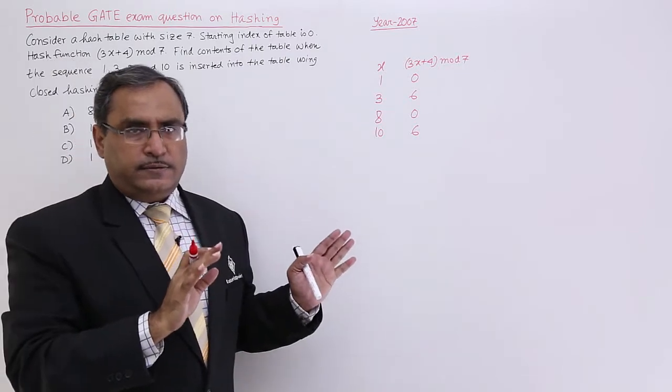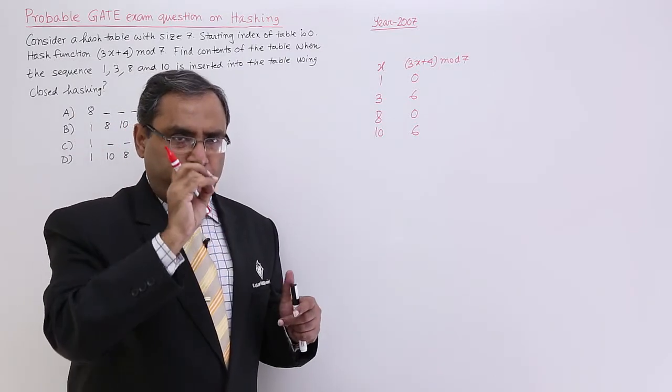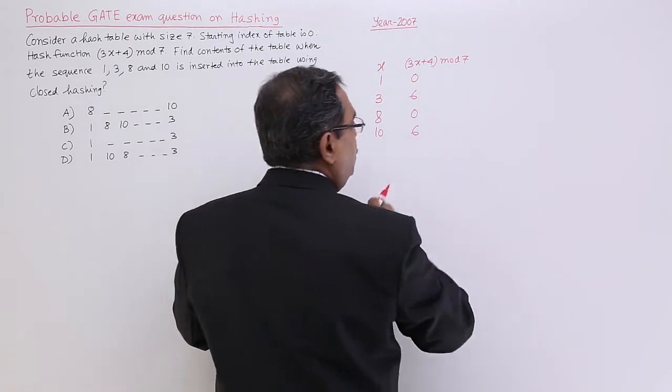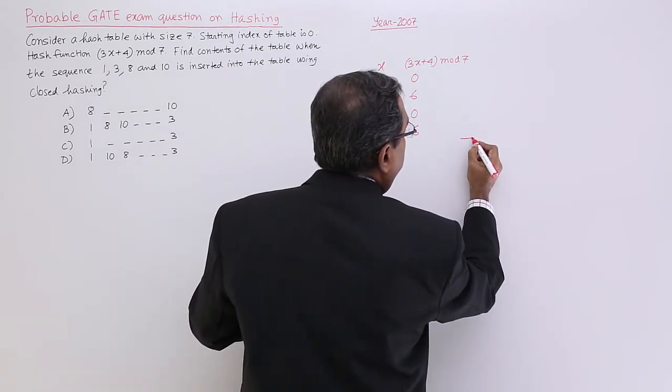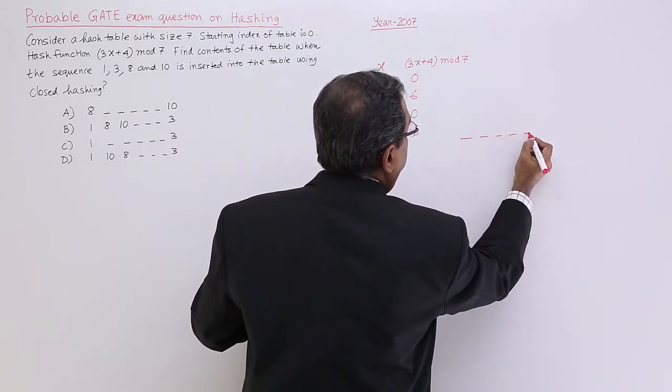I am getting these hash addresses, very simple. Now let me place them in the respective locations. We shall be having 0, 1, 2, 3, 4, 5, 6 locations.